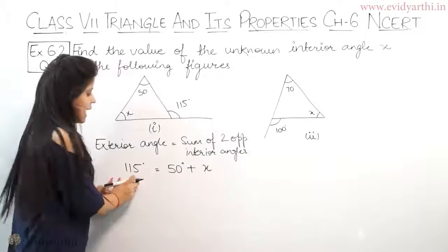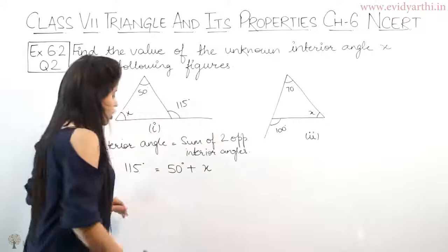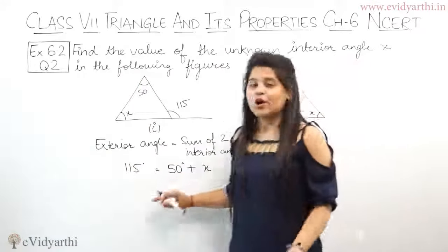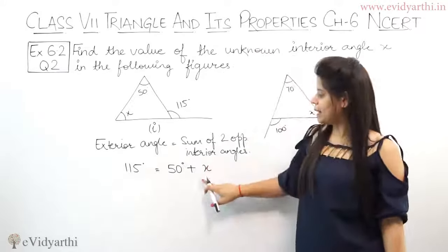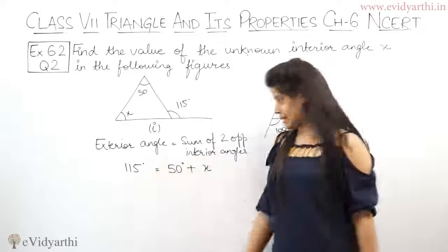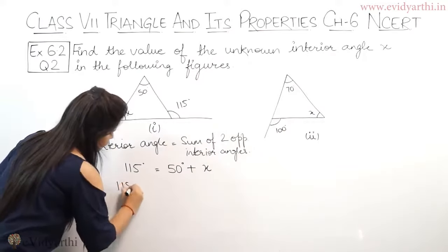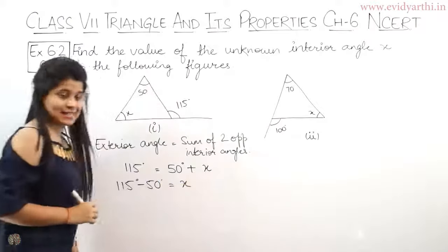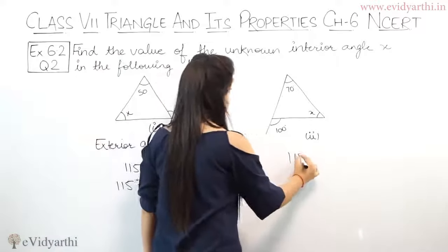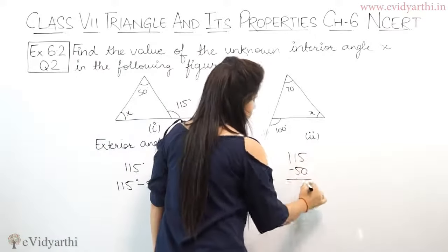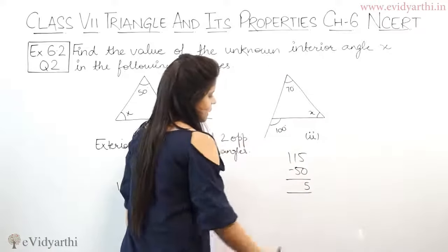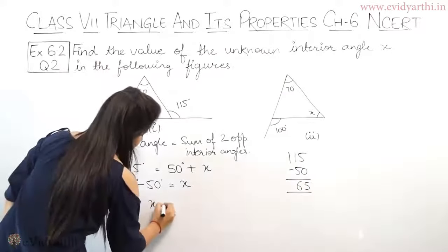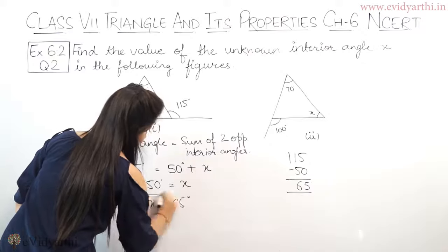So 115 degrees equals the sum of the two opposite interior angles, which are 50 degrees plus x. Now we need to find x. As we learned in chapter 4 on solving equations, this will be 115 minus 50 equals x. Let's subtract: 115 minus 50 is 65 degrees. So x equals 65 degrees.